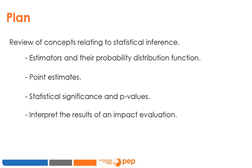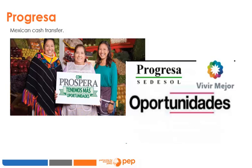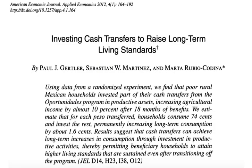Another objective of this module is to familiarize yourself with how to interpret the results of an impact evaluation. There are a number of representative evaluations that anyone doing impact evaluation should know. The Mexican cash transfer program PROGRESA, later named Oportunidades or Prospera, is one such program. PROGRESA is one of the best known developing country RCTs.